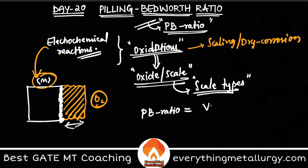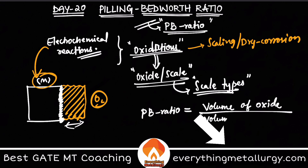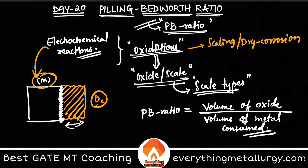The PB ratio is the ratio of the volume of oxide divided by the volume of metal that is consumed to form that oxide. You can also express this formula using densities and molecular weights. Now let's look at the different cases.